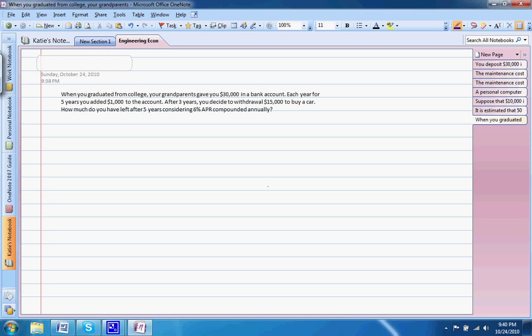So for this problem, the question asks: When you graduated from college, your grandparents gave you $30,000 in a bank account. Each year for five years, you added $1,000 to the account. After three years, you decide to withdraw $15,000 to buy a car. How much do you have left after five years, considering 6% APR compounded annually?